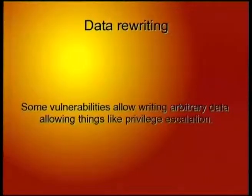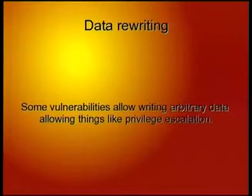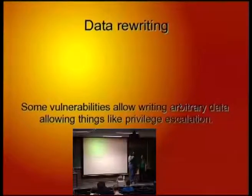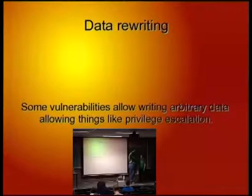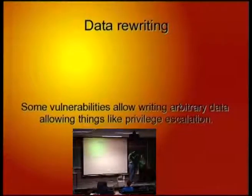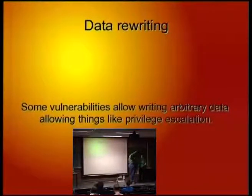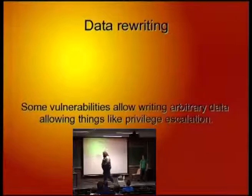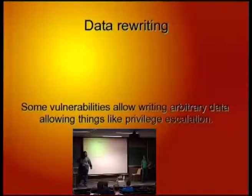We also have data rewriting. Suppose Matt wants to ask me if a user is authenticated — I'm going to say zero, we do some execution, and at the same time Matt accidentally, because of an overflow, changes that to one, then asks: are you authenticated? It says one — yes, I am. The idea is that sometimes you can rewrite data you're not supposed to, which can be used for exploits.